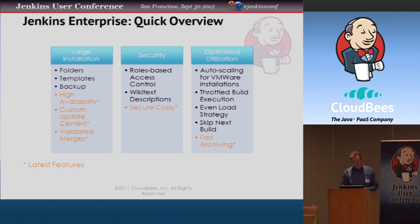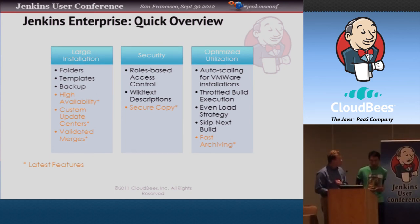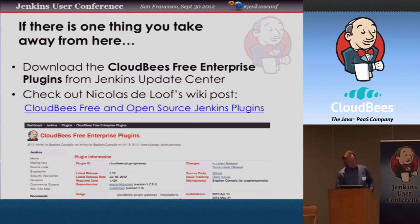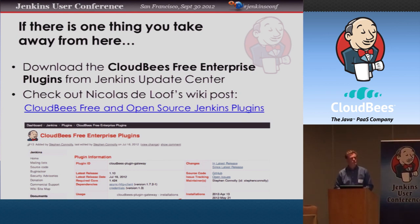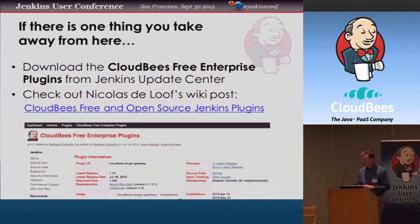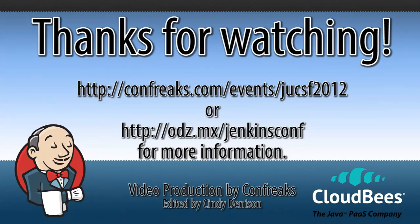Just to wrap up: as part of Jenkins Enterprise, the free plugins are the folder plugin and the backup. Please do download those CloudBees free enterprise plugins, check out Nick's wiki post, and get them from the update center. If there are things around high availability and those features, find one of the guys with the blue shirts and we'd be very happy to help you. The Jenkins Enterprise itself is free for download to try for 60 days. Thank you very much — I'm sorry we ran over for a few minutes, but I hope you found it interesting.